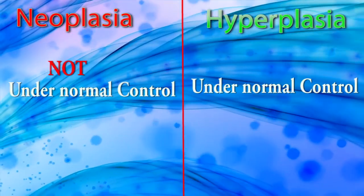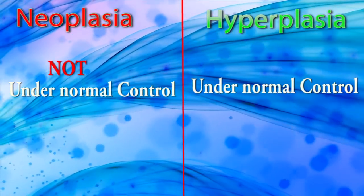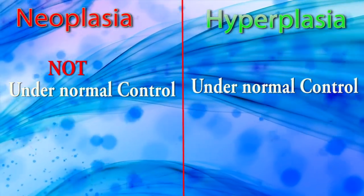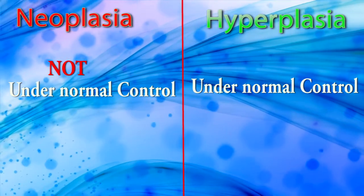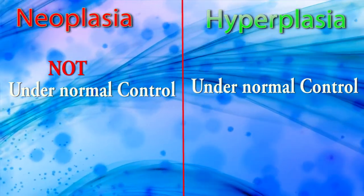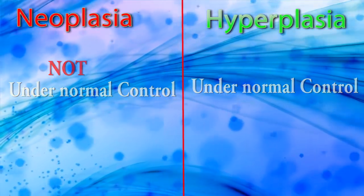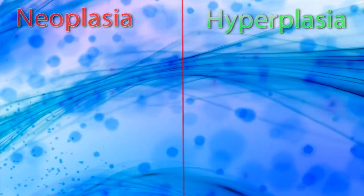In neoplasia, cell proliferation is not under normal control. But in hyperplasia, cell proliferation is under normal body control.